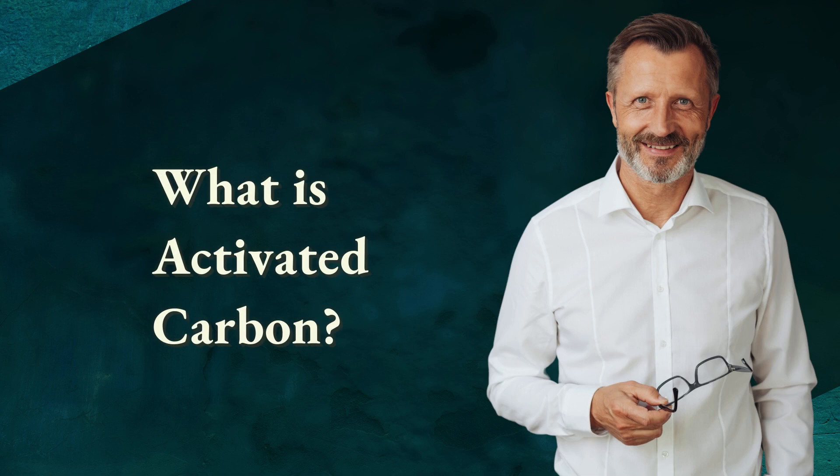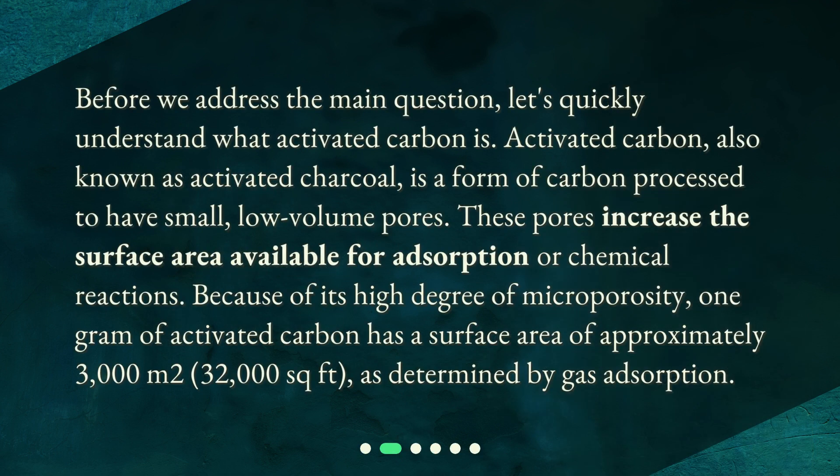What is activated carbon? Before we address the main question, let's quickly understand what activated carbon is. Activated carbon, also known as activated charcoal, is a form of carbon processed to have small, low-volume pores. These pores increase the surface area available for adsorption or chemical reactions. Because of its high degree of microporosity, one gram of activated carbon has a surface area of approximately 3,000 square meters (32,000 square feet), as determined by gas adsorption.